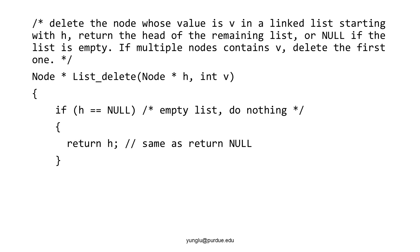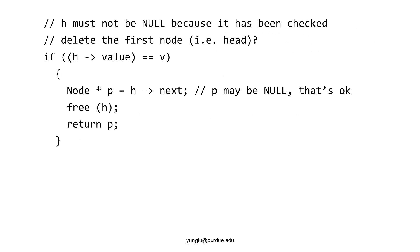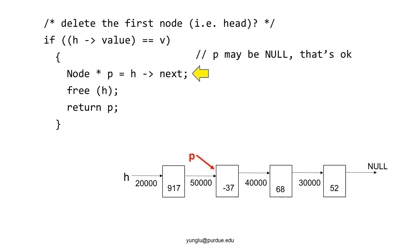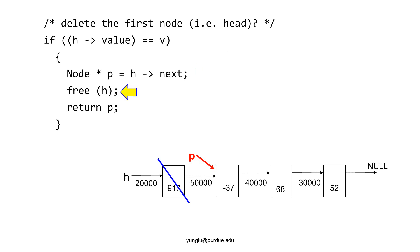If h is not null, we consider the second case: when the first node is the node to delete. We check whether the node's value is the same as the second argument. If they match, the first node will be deleted. Before deleting the first node, we need to save the next node, which is stored in pointer p. It is possible that p is null because the linked list has only one node. The memory for the first node is freed, then the function returns p.